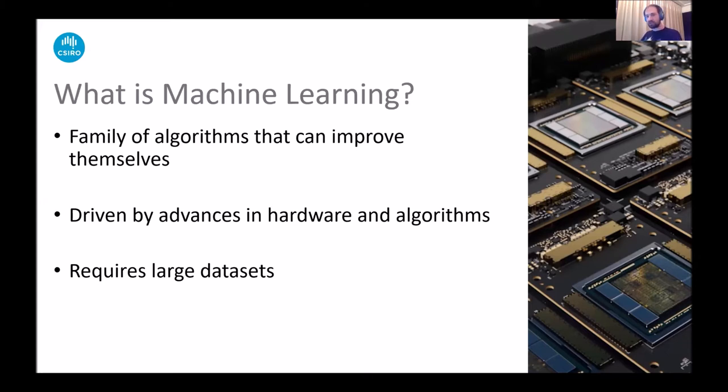So what is machine learning? Machine learning is basically a family of algorithms that can improve themselves. They are not very homogeneous. Actually, the whole family is pretty heterogeneous. There are a multiple number of techniques, so it's not like if you say I'm using machine learning, there is a number of techniques that you can really use, and they are interchangeable or not. It's a very wide area, actually.